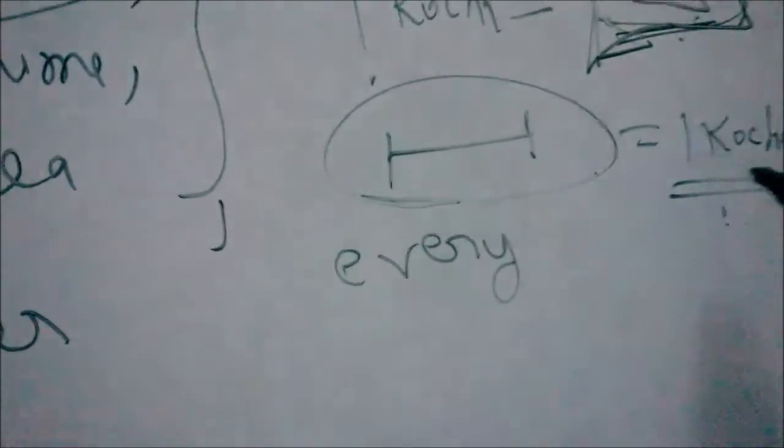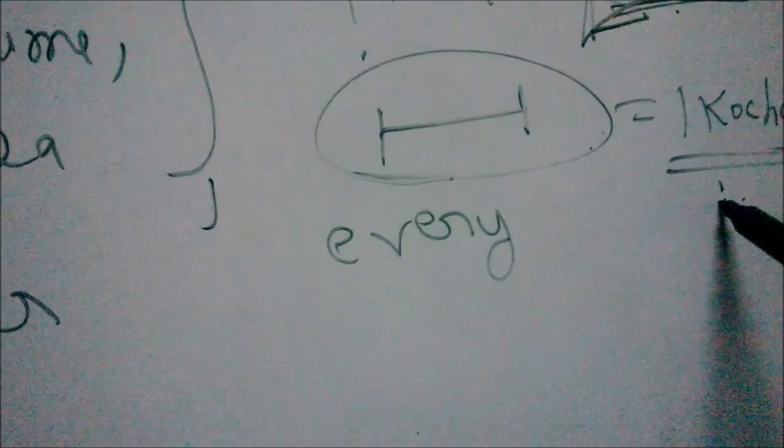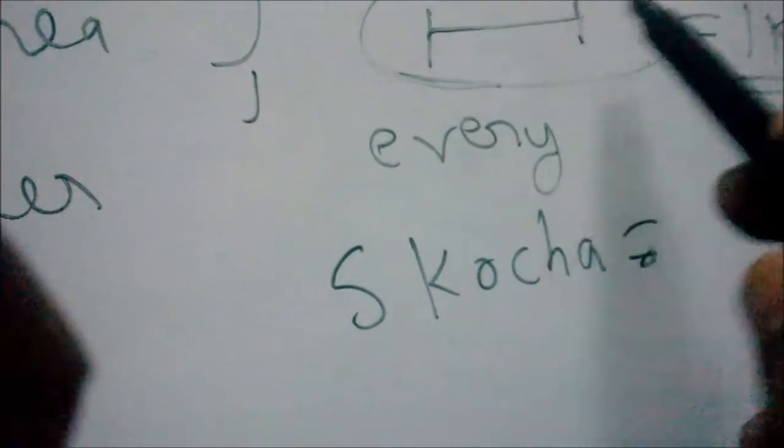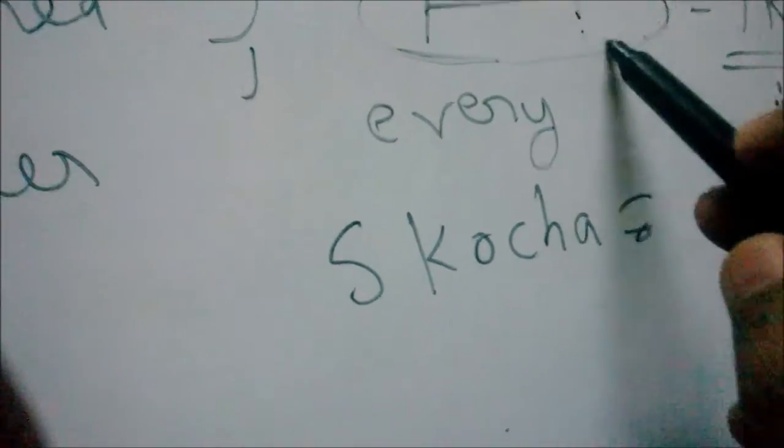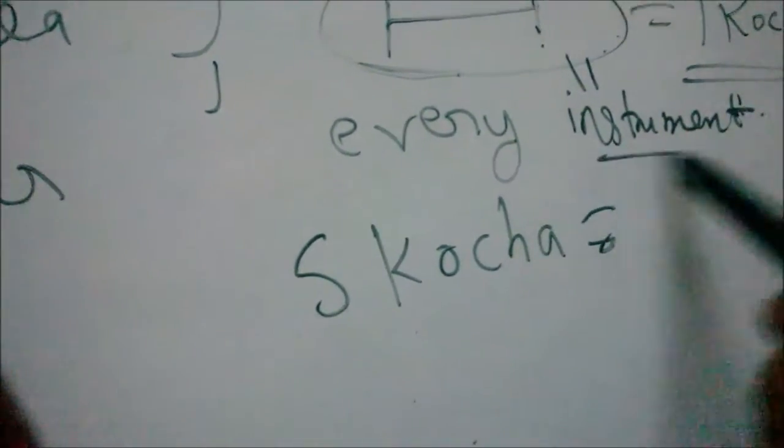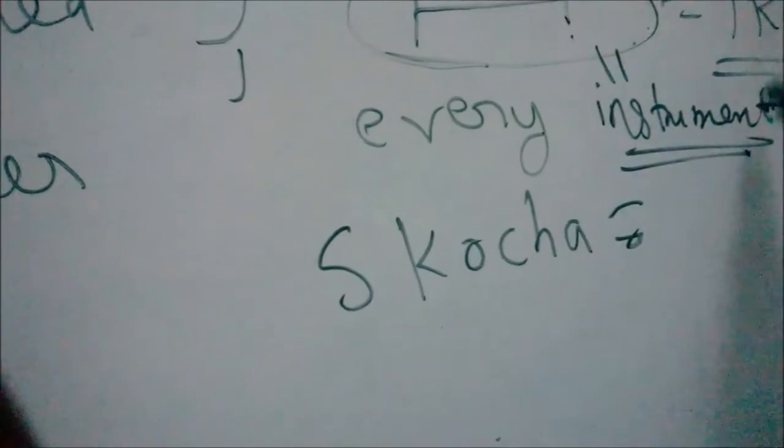Now once this happens, whenever I write five kocha, six kocha, seven kocha, anyone in the world can interpret it because they have this measurement system embedded. This is called an instrument. We have developed an instrument with the help of my finger which is having length of the kocha. So anyone in the world can measure this.